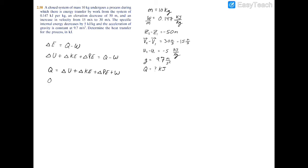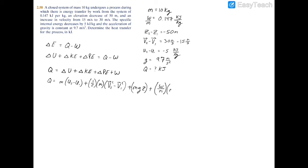The heat transfer Q equals the mass times (U2 minus U1), plus one-half times the mass times the change in velocity squared for kinetic energy, plus M times g times z for potential energy, plus the work per unit mass basis times the mass.